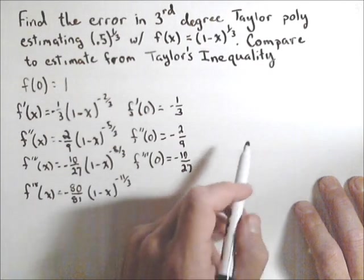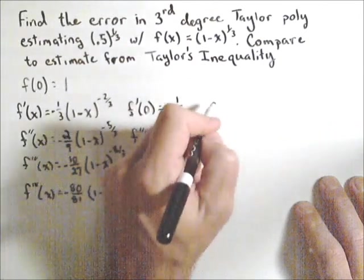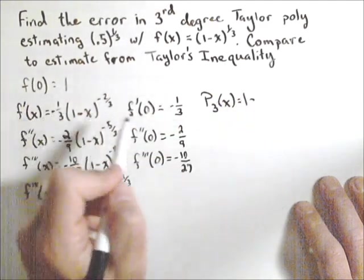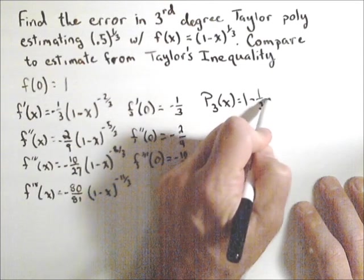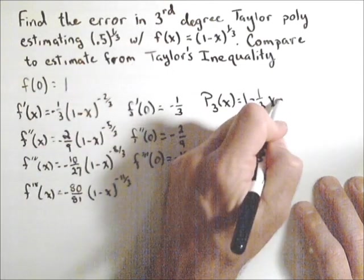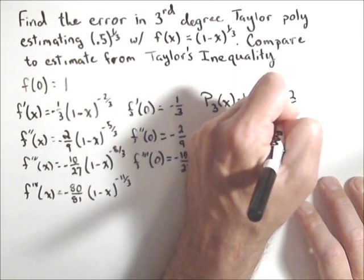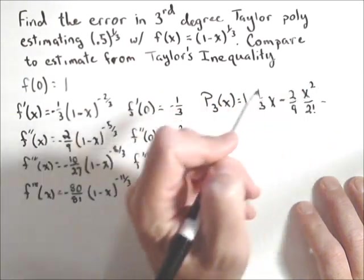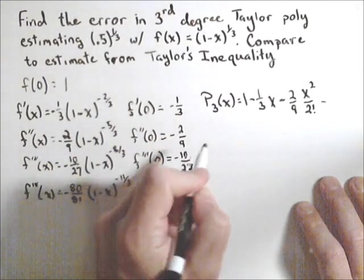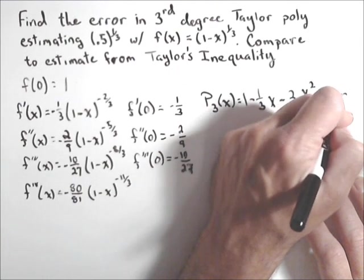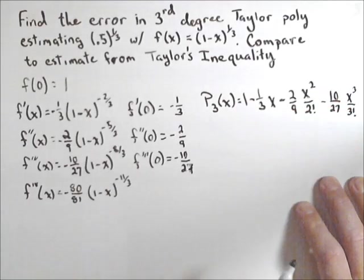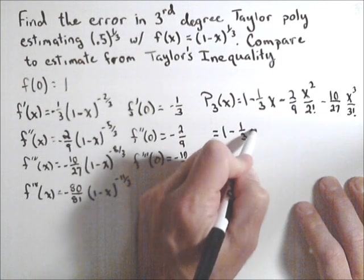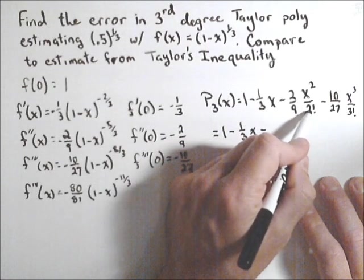Let's first build our third degree Taylor polynomial for this guy. So P_3(x) is 1 - 1/3 times x, remember a is zero so it's just x, minus 2/9 times x^2 over 2 factorial.